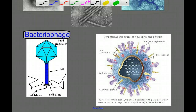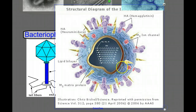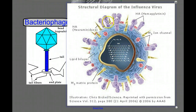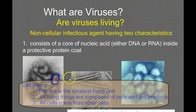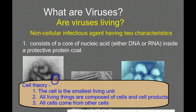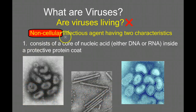Over here we have an artist's rendition of the HIV virus. You can see that the HIV virus is pretty complex — we have our nucleic acid core, our proteins are on the surface, and it's also incorporated by a lipid layer. But we have a big hint here. When we remind ourselves of the cell theory, we know that the cell is the small living unit, and that all living things are composed of cells and cell products. All cells come from other cells. Viruses are non-cellular — first strike against viruses being living.